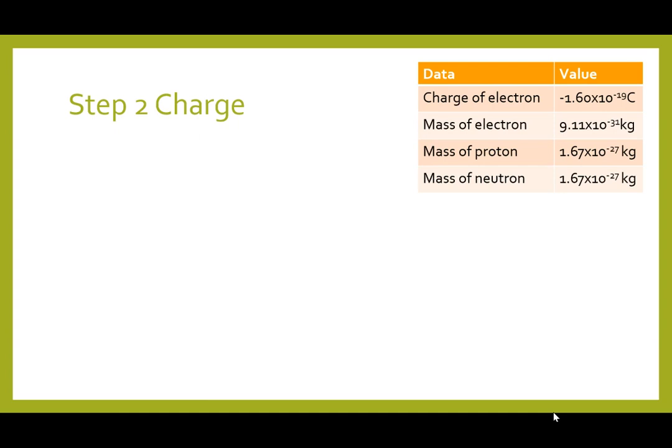So let's do step two, which is to calculate the charge. And we don't really care about the sign of the charge. So we're just going to neglect that for now. So the charge is very simple. We've got magnesium two positive. So that means that two electrons have been lost. So we just have to multiply the charge of the electron by two. We do two times 1.6 times 10 to the minus 19. That's taken straight off our data table.